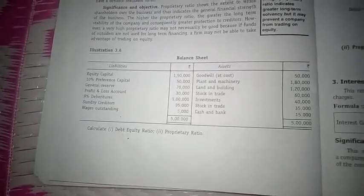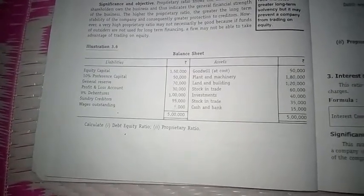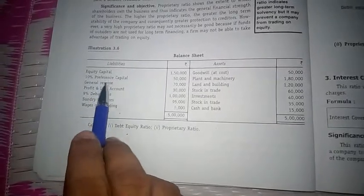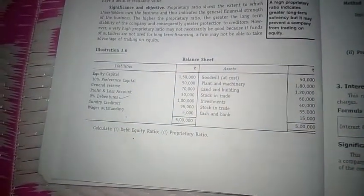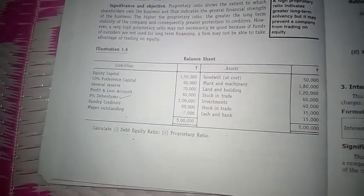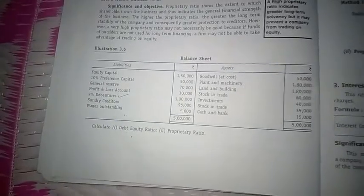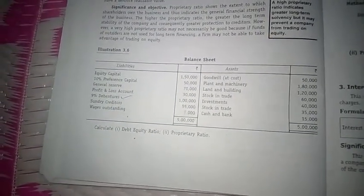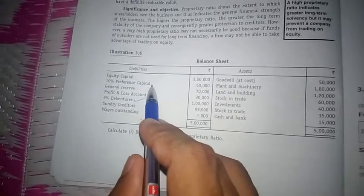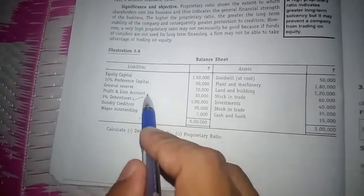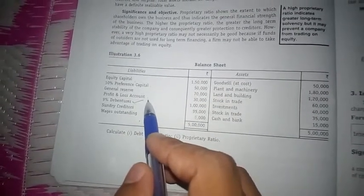In this problem, the company has debentures and no other long term loans, so long term debts will be only the 9 percent debenture. Shareholders fund as per this problem is the total of equity share capital, 10 percent preferential capital, general reserve, and profit and loss account. The company does not have any capital reserve.